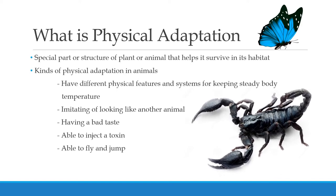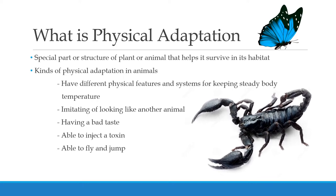What is physical adaptation? It is a special part or structure of a plant or animal that helps it survive in its habitat. Kinds of physical adaptation in animals include, for example, having a bad taste, being able to inject a toxin — just look at the picture, it can inject a toxin — being able to fly and jump, and imitating or looking like another animal.